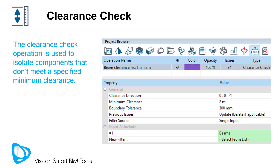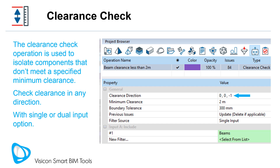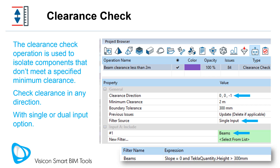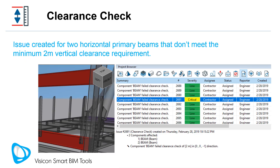The Clearance Check operation is used to isolate components that don't meet a specific minimum clearance requirement. The operation can be configured to check clearance in any direction, and similar to the Clash Check, it can be configured to work off a single or dual input set. In this example, the Clearance Check operation is set for a single filter source. The assigned filter is configured to only select horizontal beams with a height of at least 300 millimeters, checking for the horizontal condition by limiting the slope to zero.